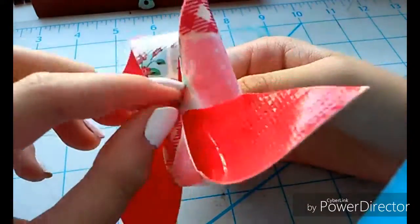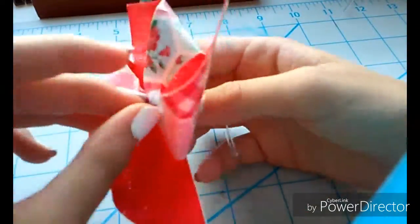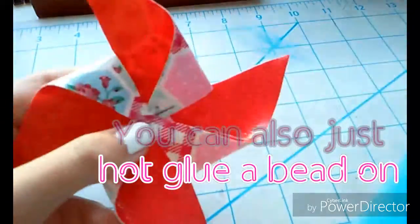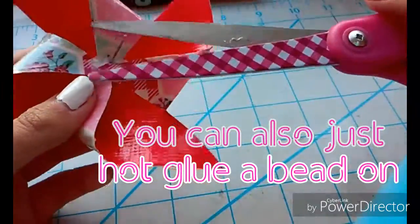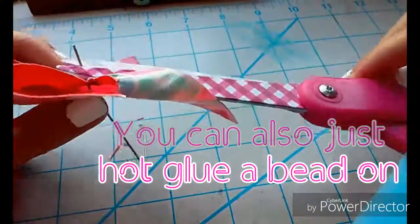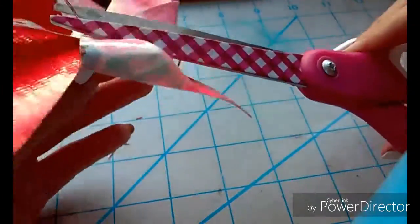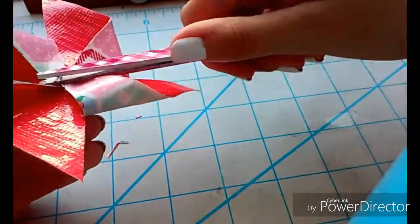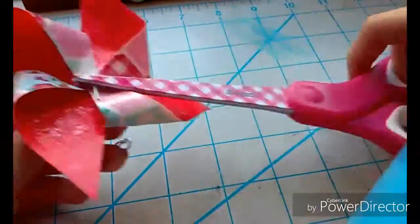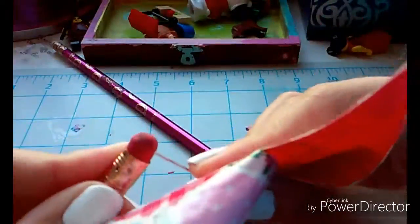So then what I did was I actually just took a little bead and I ended up hot gluing it on the end. But if you'd like, you can just take a pair of scissors or any tool and just fold it over. But I found that way didn't work as well.